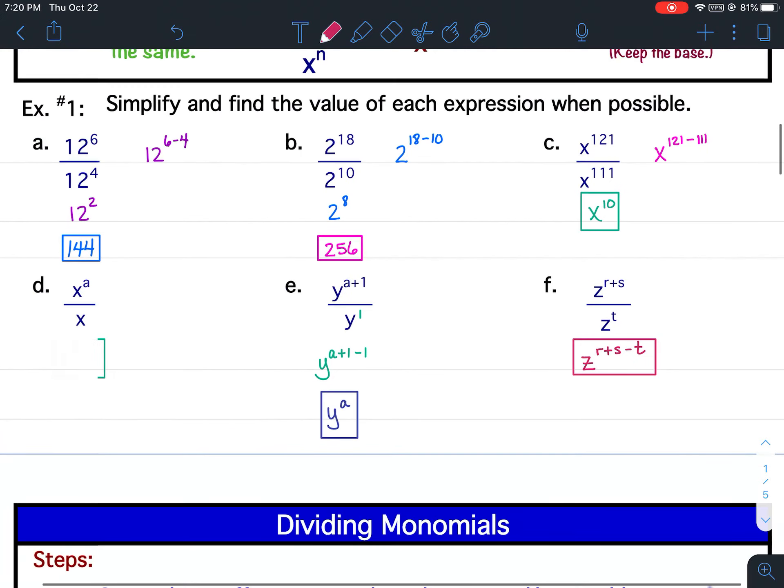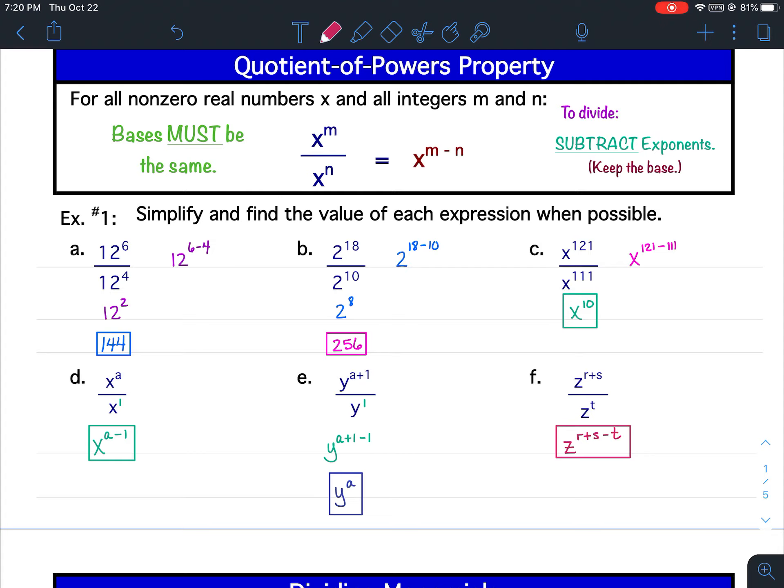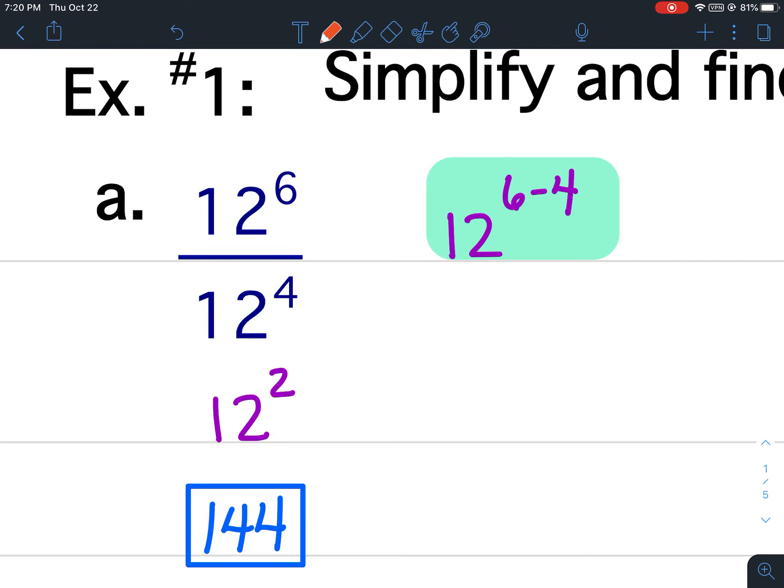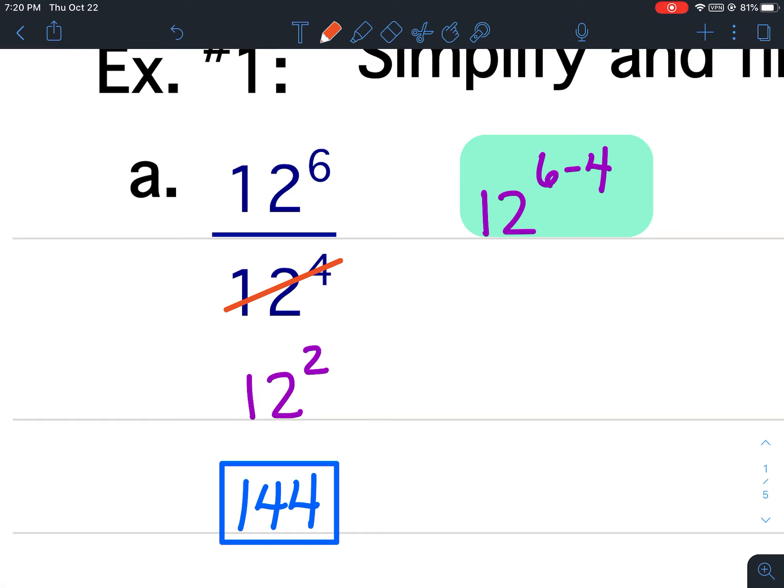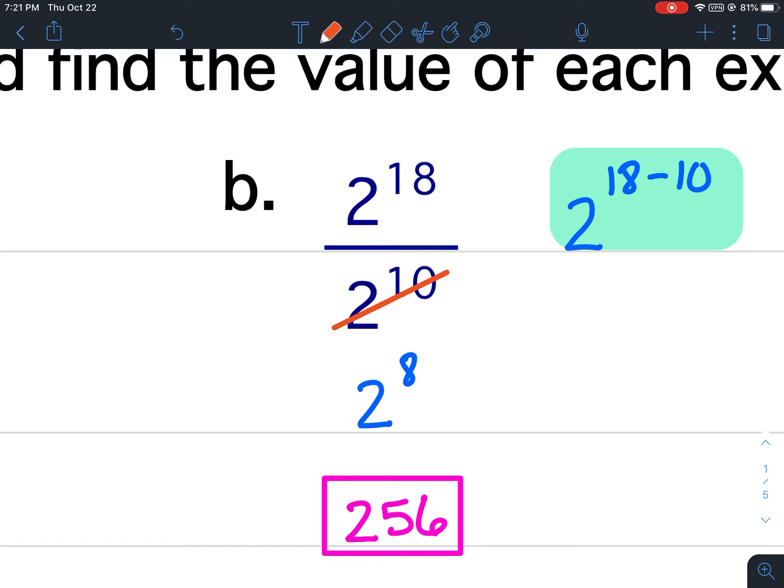All right, now again when you are dividing you subtract the exponents. Now I want to show you a way to do this that makes it just a little bit easier. This stuff up over here off to the side we're not going to be writing that down. Instead we're going to show our work a little bit different. So let's go back to a. What you're going to do is you're going to completely cross out the term with the smaller exponent. So 12 to the fourth has the smaller exponent, and then I'm going to subtract exponents, larger exponent minus smaller exponent. So again I'm going to take the 6 minus the 4. 6 minus 4 is 2, and that's how I got 12 squared. 2 to the tenth, that has the smaller exponent, so I completely cross it out and then 18 minus 10 is 8. That's how I got 2 to the 8.